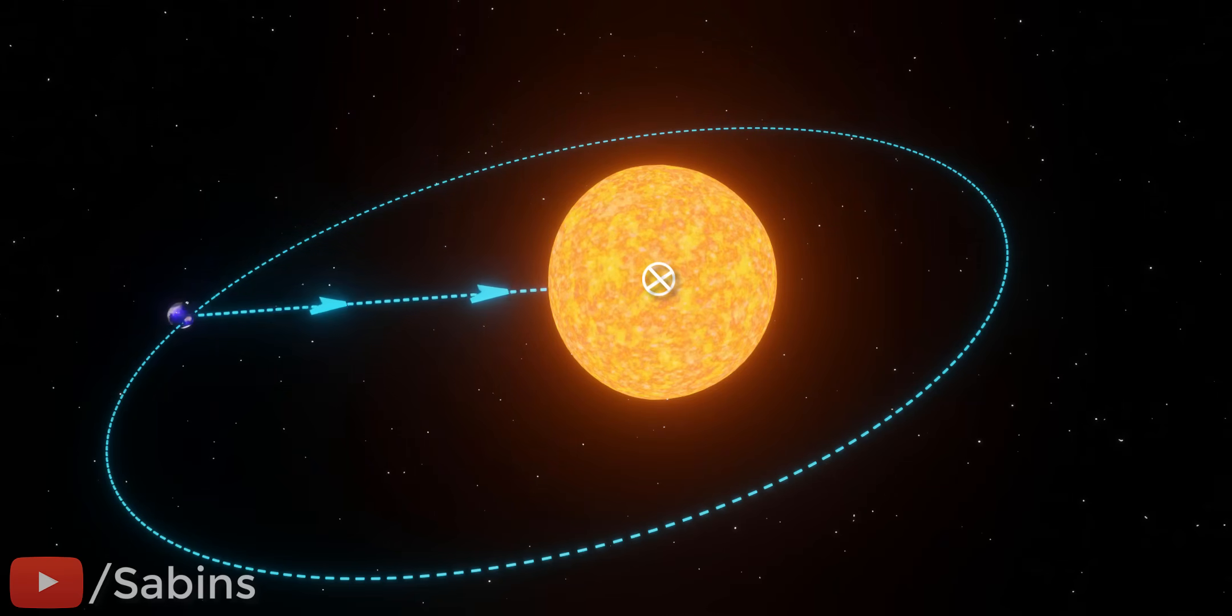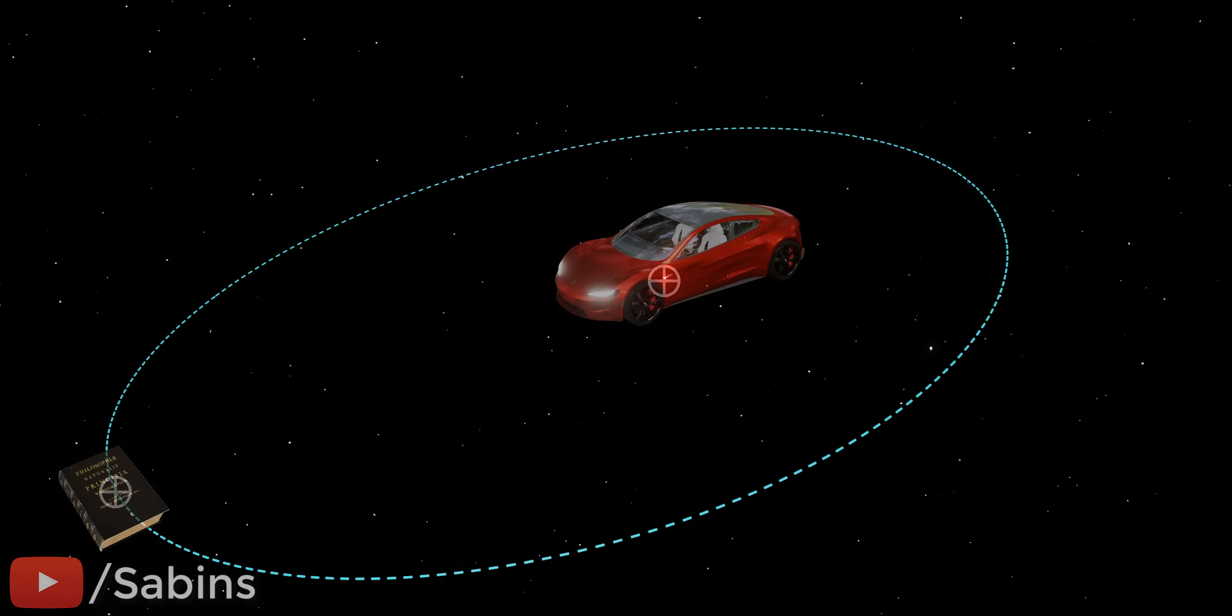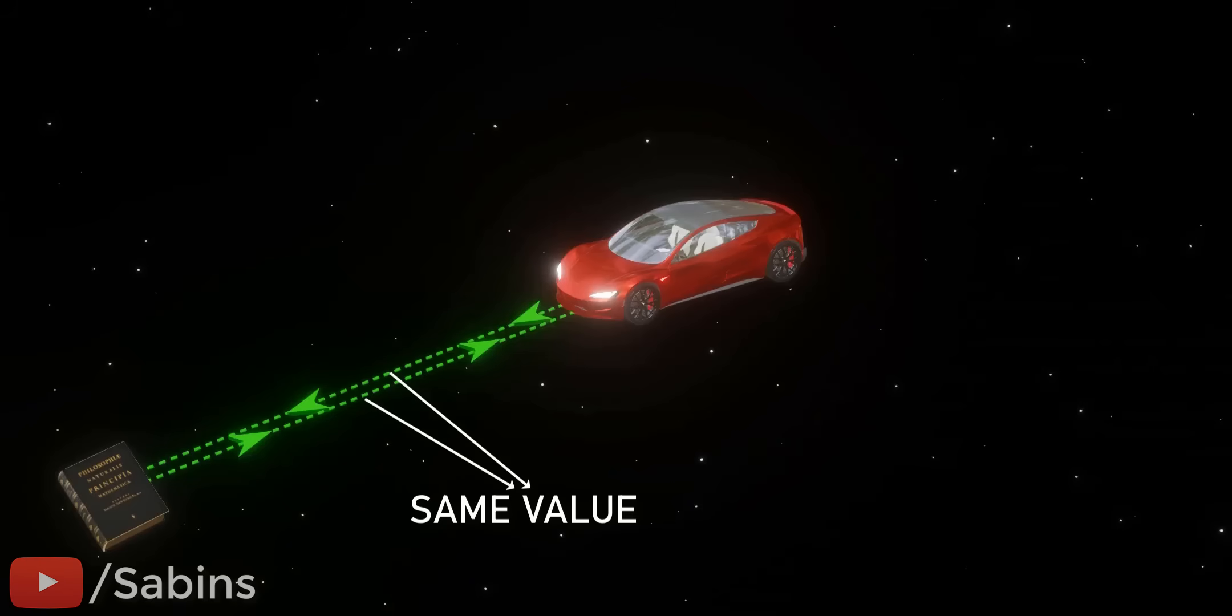Now, let's move away from these rounded objects. With the same logic, this car will attract this book towards its center of mass. Similarly, this book will attract this car towards its center of mass with a certain force. According to Newton's third law of motion, these two force values should be equal.